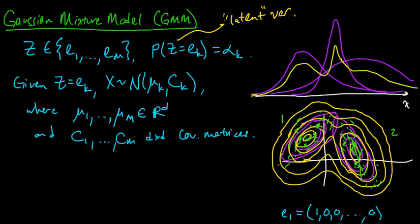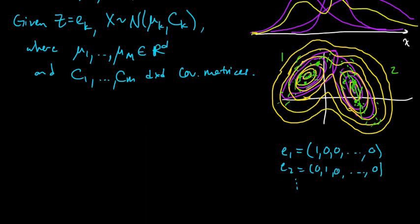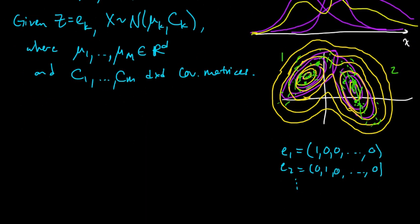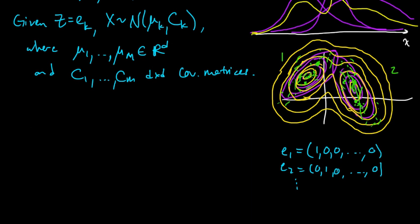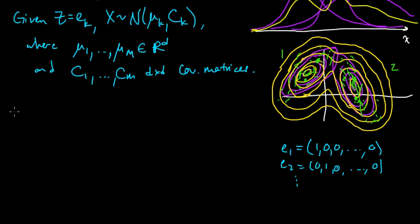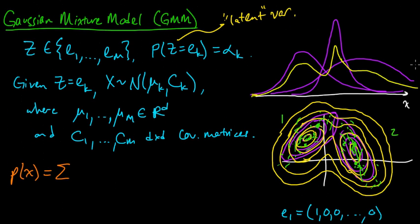So let's write down what the probability density, the density function for this model is. Use different color. Let's use orange color here. So first let's look at the marginal distribution on x. The marginal distribution on x, that's really sort of the thing that we're going to be interested in. In this type of model, this z, well, I called it a latent variable. I mean, technically speaking, it's not necessarily, there's nothing about it here that would show that it's a latent variable. But usually when you use a Gaussian mixture model,